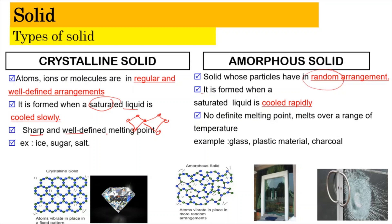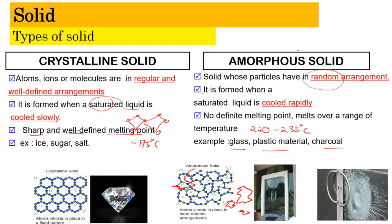Crystalline solids have a sharp, well-defined melting point — for example, exactly 175°C. Amorphous solids have a range of melting temperatures, for example 220 to 225°C. Examples of amorphous solids include glass, plastic materials, and charcoal. When glass breaks, it breaks into pieces of different sizes and irregular shapes due to its random particle arrangement.